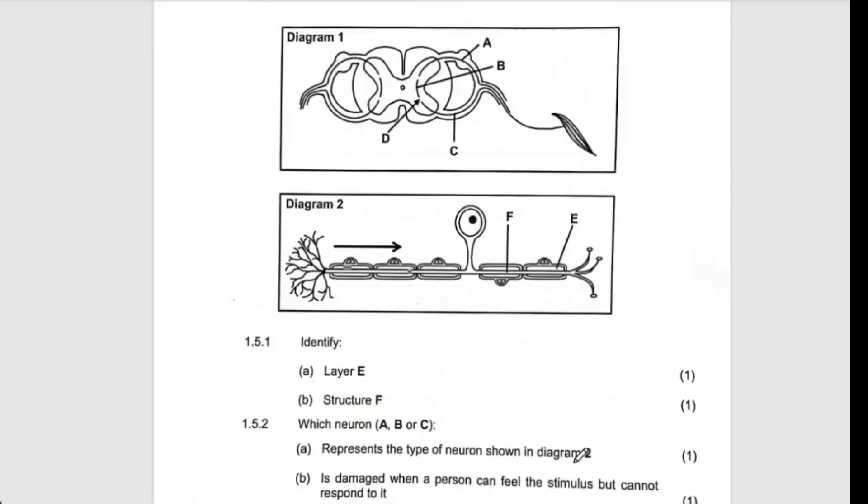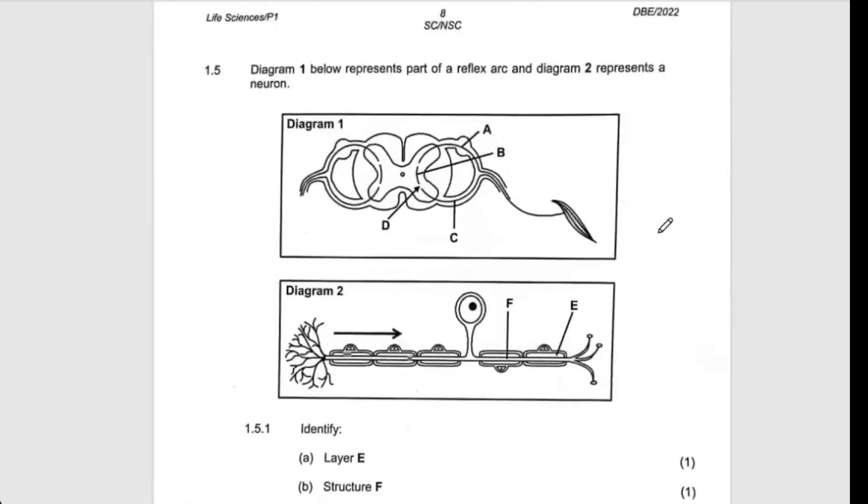Which neuron ABC represents the type of neuron shown in diagram 2? Because the cell body is along the neuron, therefore it is going to become the sensory neuron. So the sensory neuron is this part, which is A.